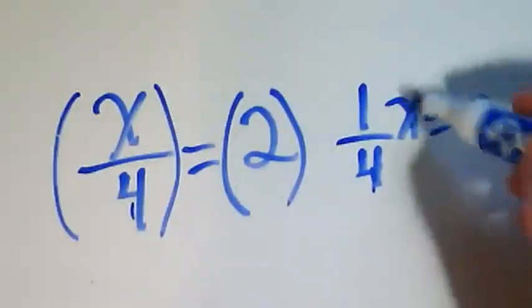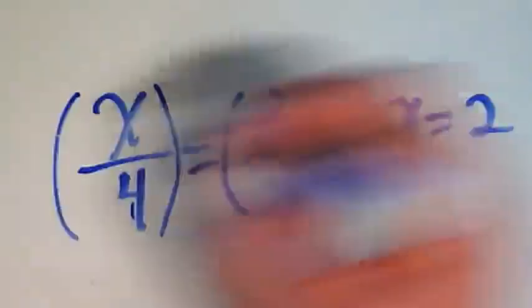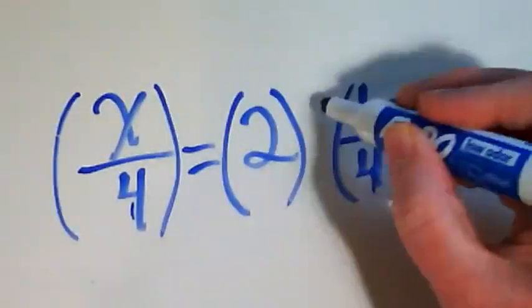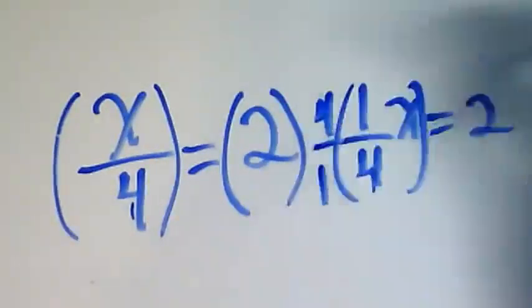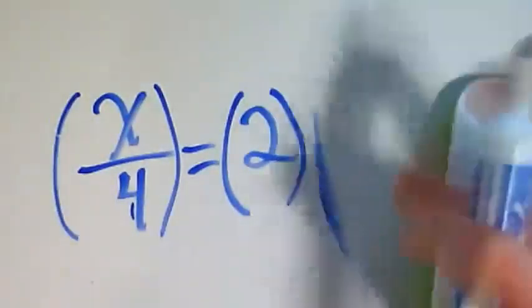So what I want to do is I want to multiply by the reciprocal of this 1 fourth. The reciprocal of 1 fourth is 4 over 1.